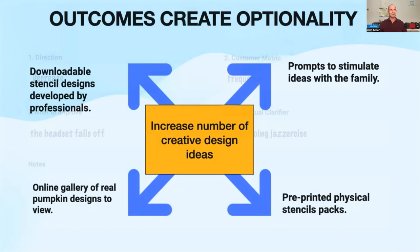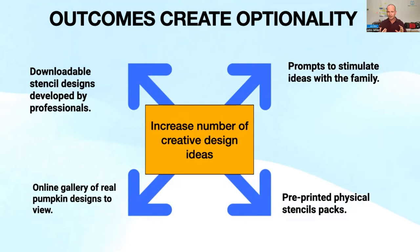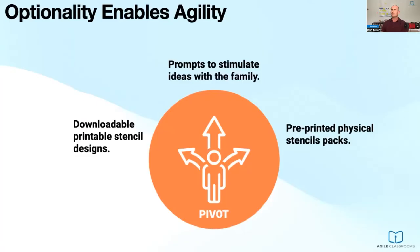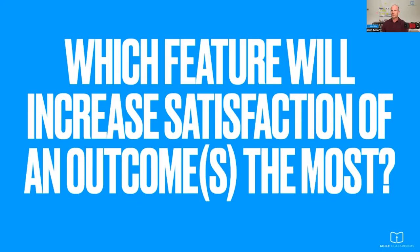Outcomes create optionality. It's hard to have optionality if you start with features — you paint yourself into a corner, you prematurely converge, you can't pivot. Let's say we chose the outcome: 'Increase the number of creative design ideas for families carving a pumpkin.' We thought of four different solution options. It creates optionality. The question becomes: which of these features, out of those four, increases the satisfaction of that outcome most?